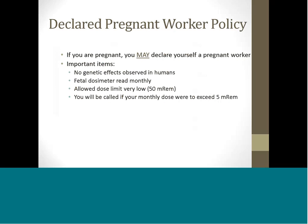If you are pregnant, you may declare yourself a pregnant worker. This is an elective process and is not mandatory. A fetal badge is issued and is exchanged on a monthly basis. You will be called if the monthly fetal dose exceeds 25 millirems. Your monthly dose limit is very low — 50 millirems. Regulatory guide 8.13 goes over prenatal radiation exposure and can be found on the EH&S website.